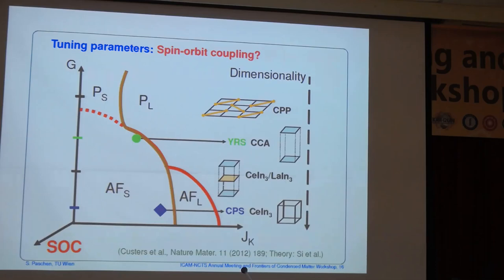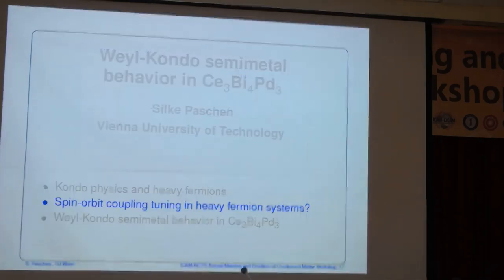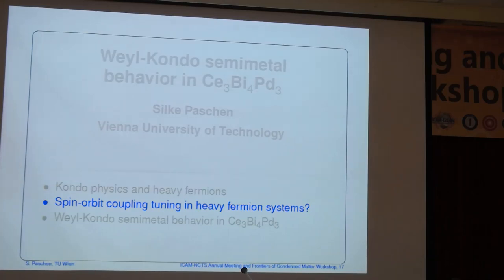Spin-orbit coupling is an important parameter — it should be large if you want to find, for instance, a topological insulator, because band inversion can lead to such interesting states. Can we find something that tunes spin-orbit coupling? We believe we can, and let me show how we think we are changing spin-orbit coupling systematically in a heavy fermion system.